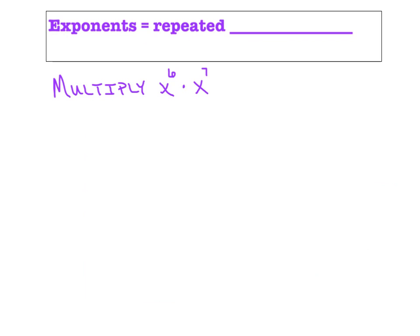In a nutshell, exponents are basically just repeated multiplication. At any point you get confused or lose track of where you're at, just keep telling yourself: it's just repeated multiplication. So when we say x to the 6th, what we're doing is repeating the idea of multiplying x by itself 6 times.